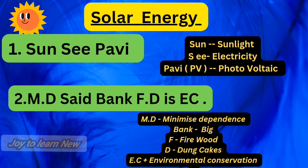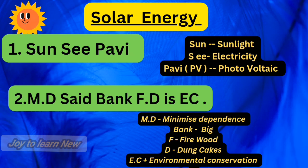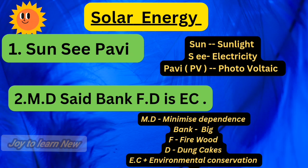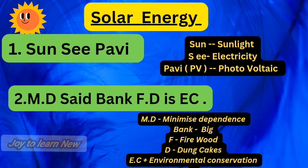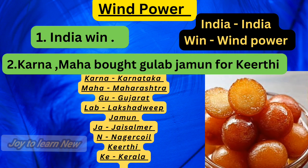The second shortcut is 'MD said bank FD is easy.' MD means minimize dependence — B stands for big power plants, so it minimizes the dependence on big power plants. FD: F stands for firewood and D stands for dung cakes. These contribute to environmental conservation — EC refers to environmental conservation. Repeat: Sun C Pavie, and MD said bank FD is easy.